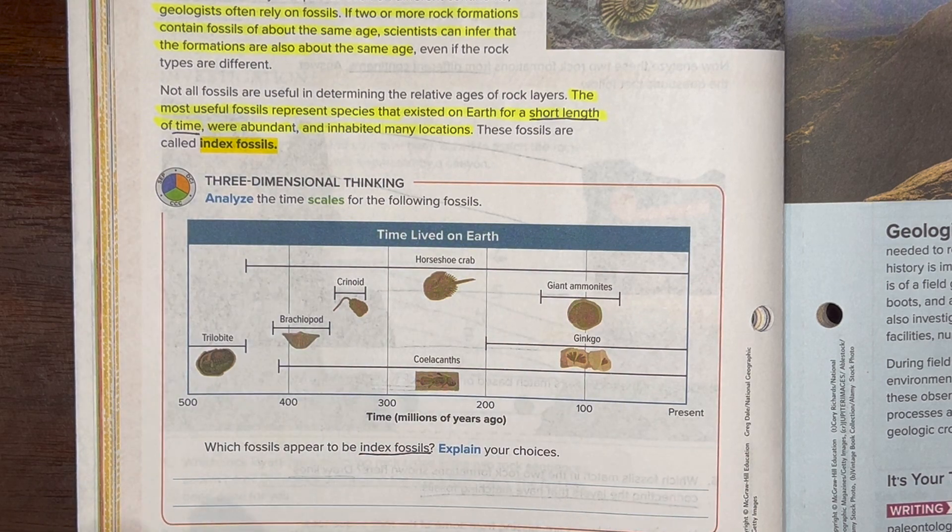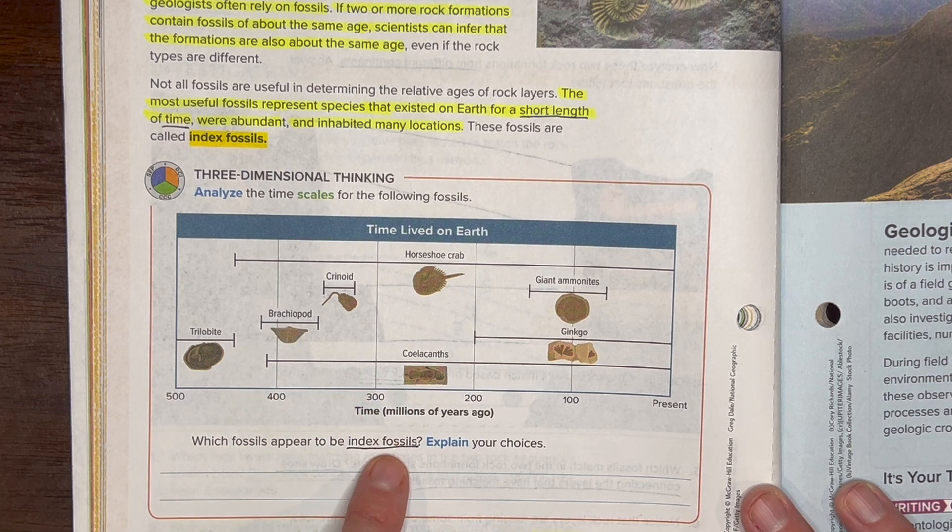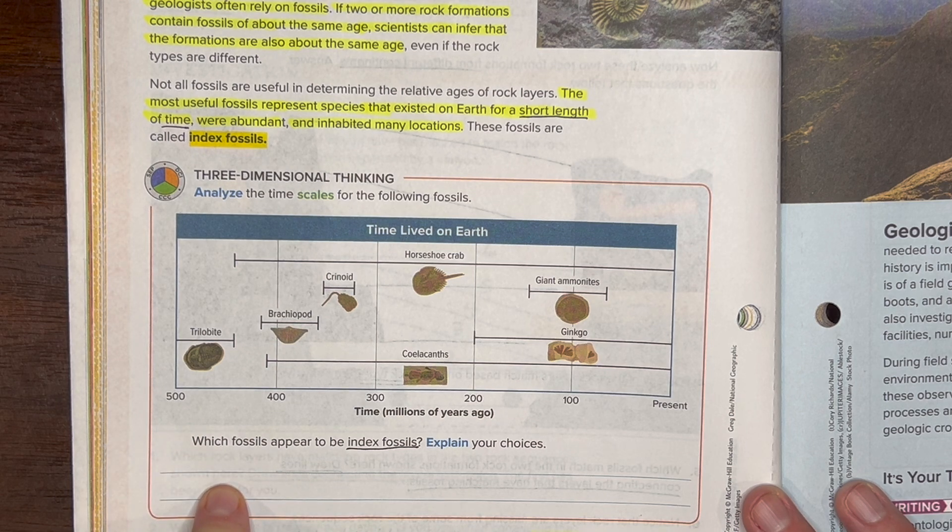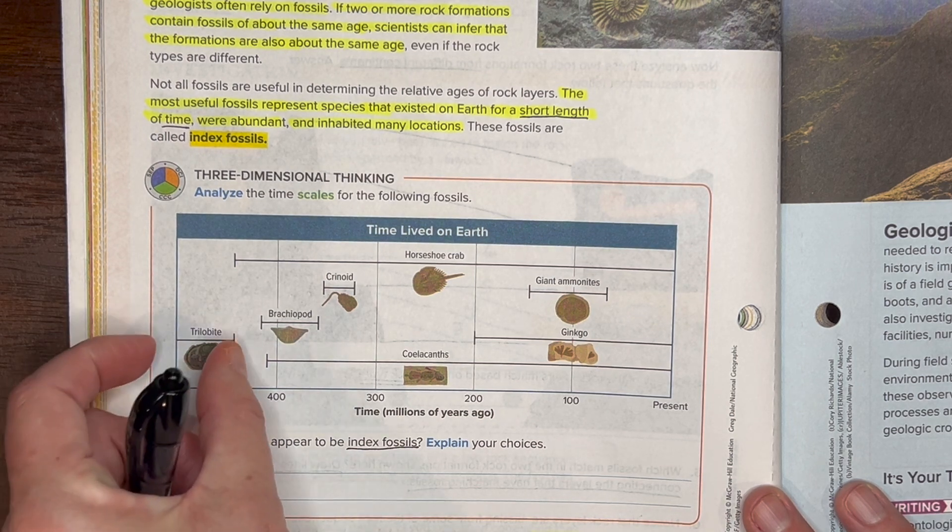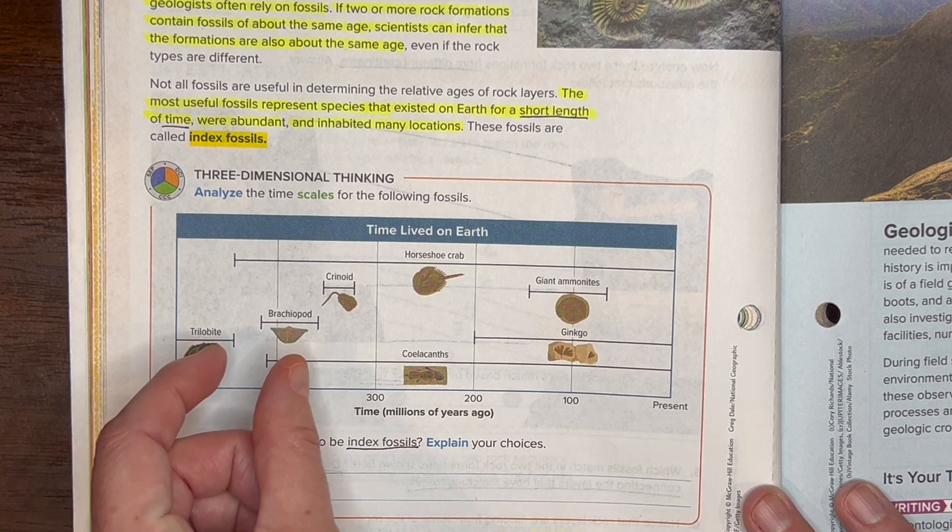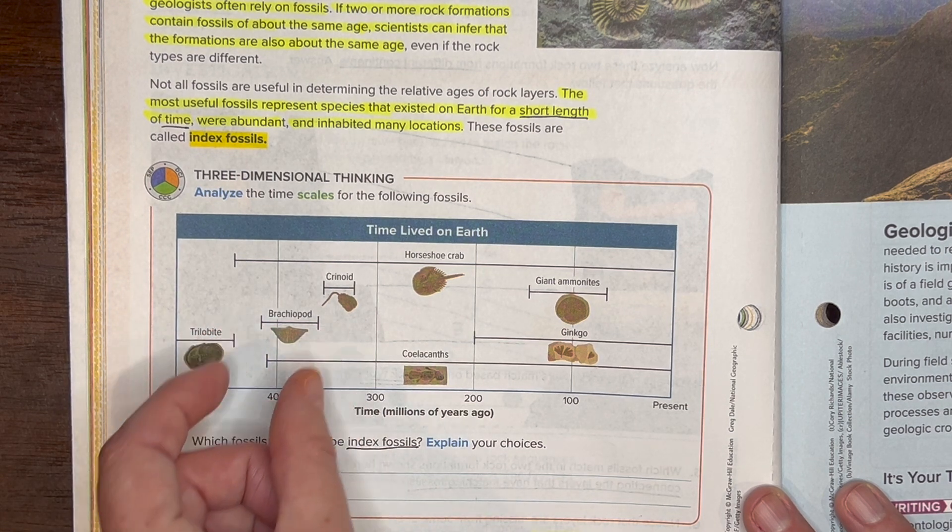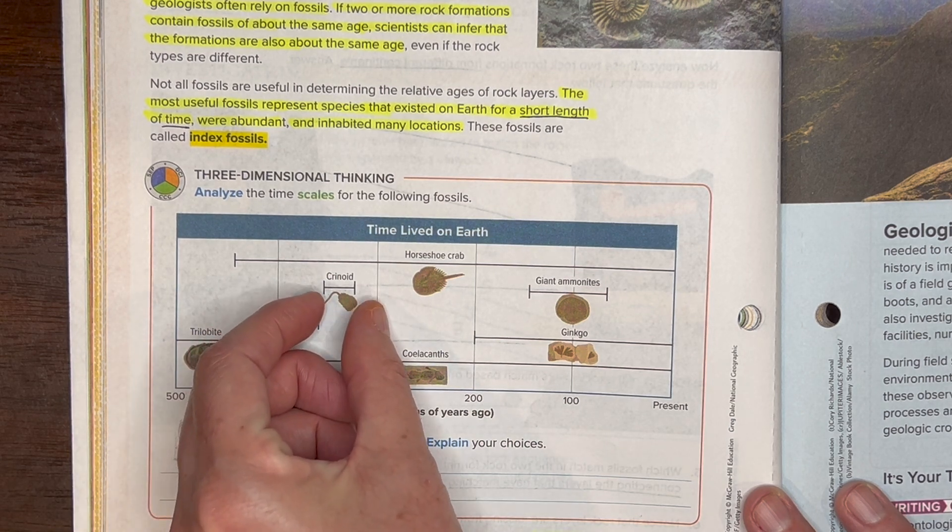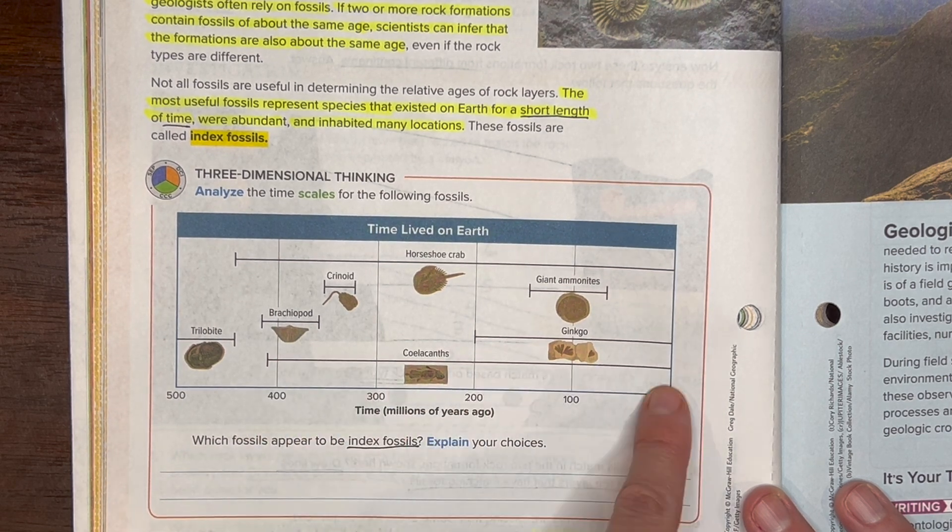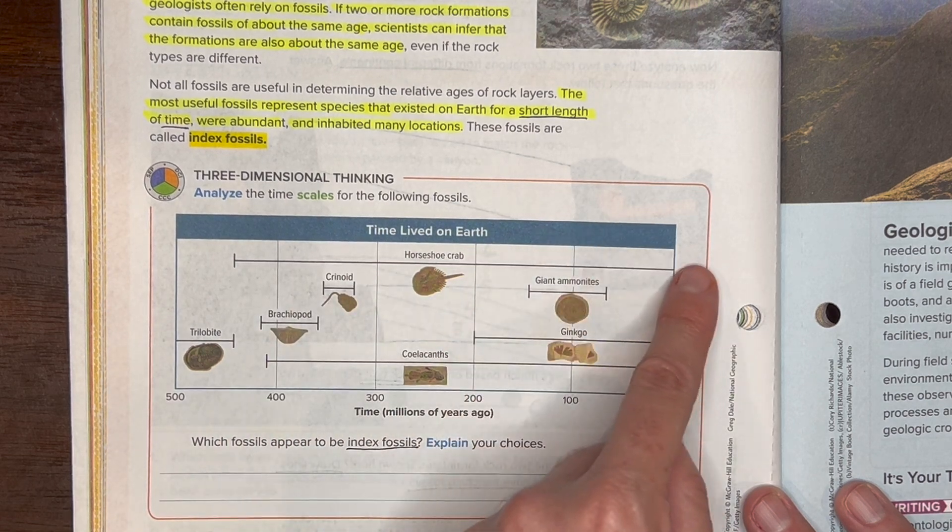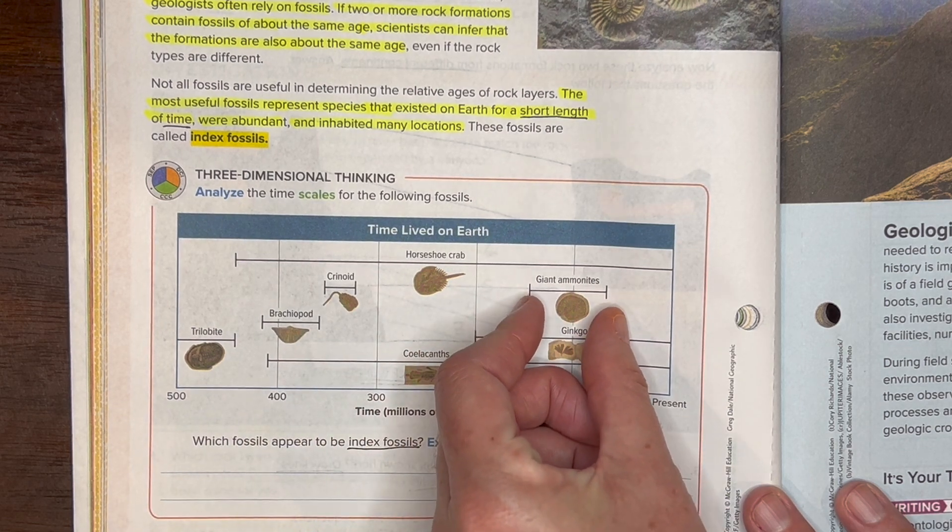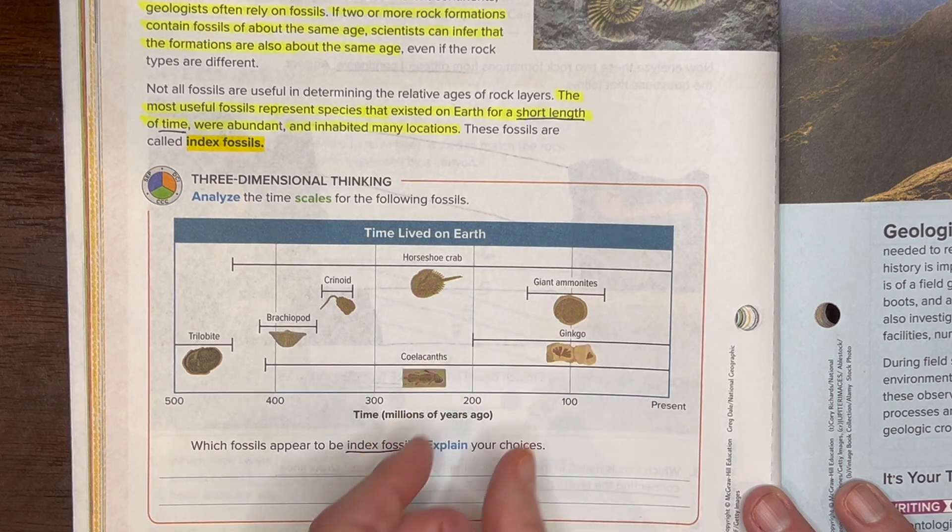Let's look at this little time chart here and let's see which ones appear to be good index fossils. We want to look for something that is during a short period of time. Well, the trilobite only lived for a short period of time, so write down trilobite. What's another short period of time? The brachiopod, yeah that's a good index fossil. Oh, the crinoid, very short period of time. And then this would not be good, the coelacanth, because it's so long, same with the horseshoe crab, they lived for so long, not a good index fossil. What's another short period? How about these giant ammonites? Yeah, short period of time, those are a great index fossil.